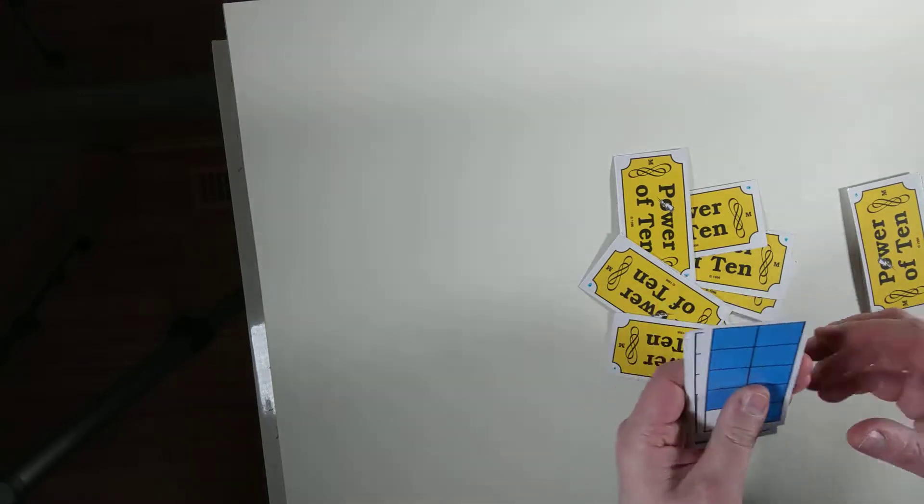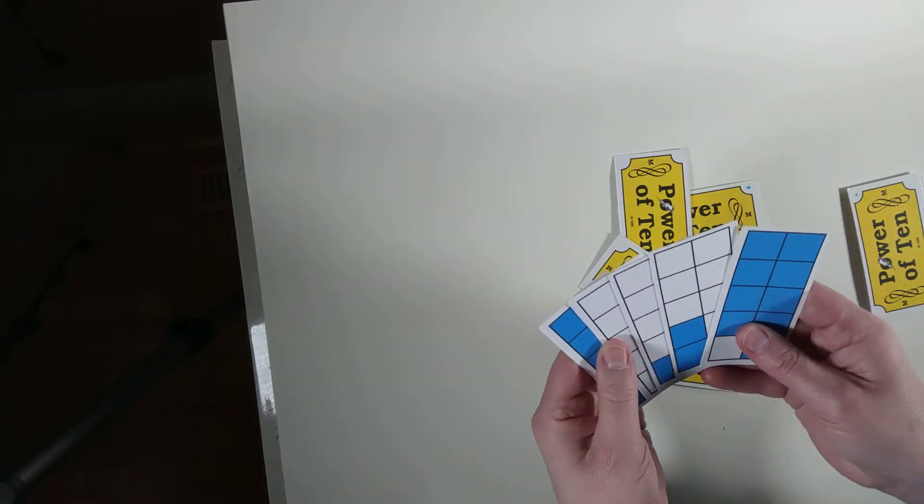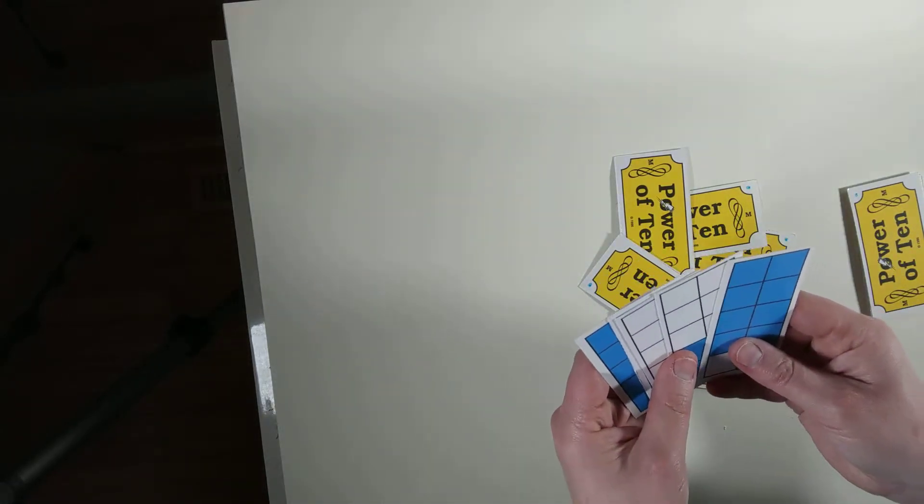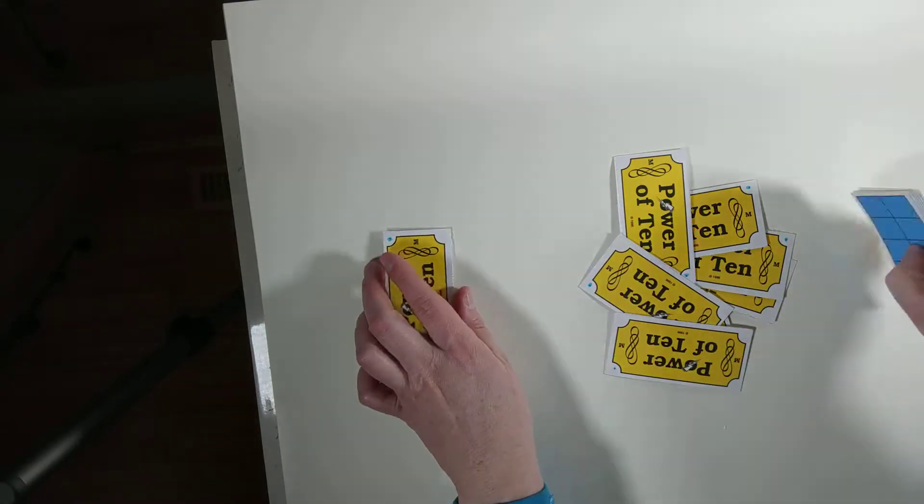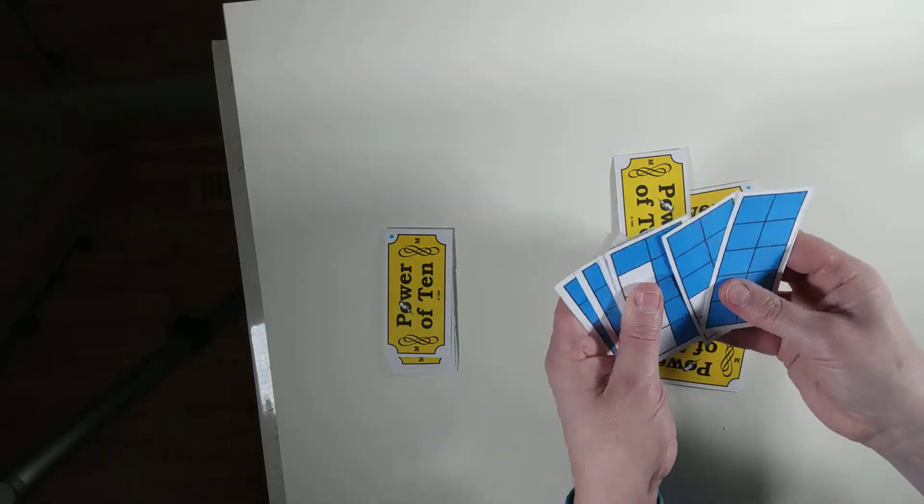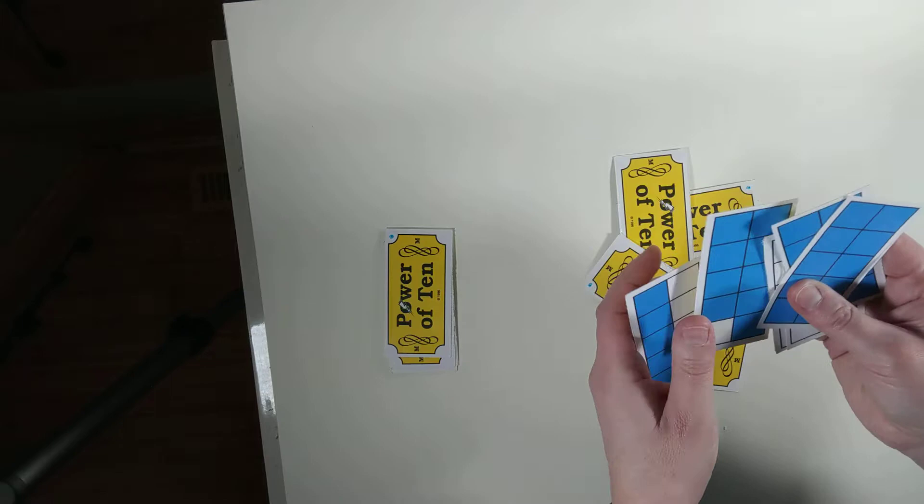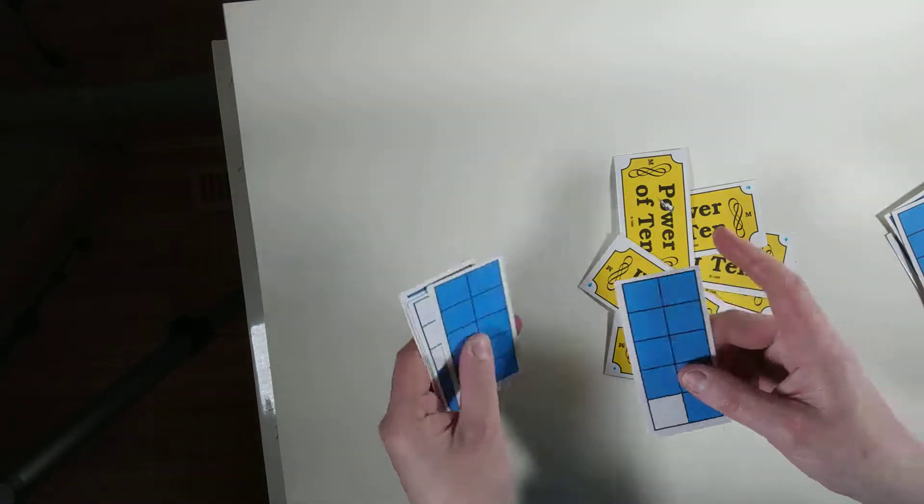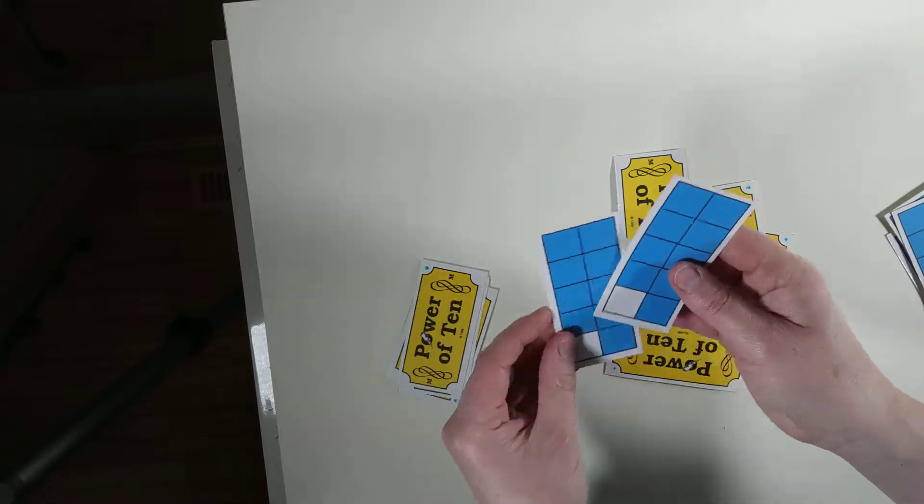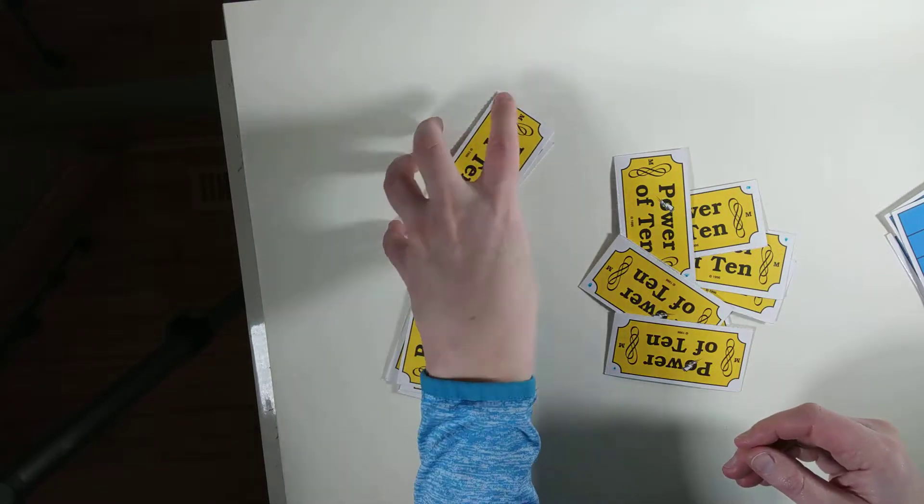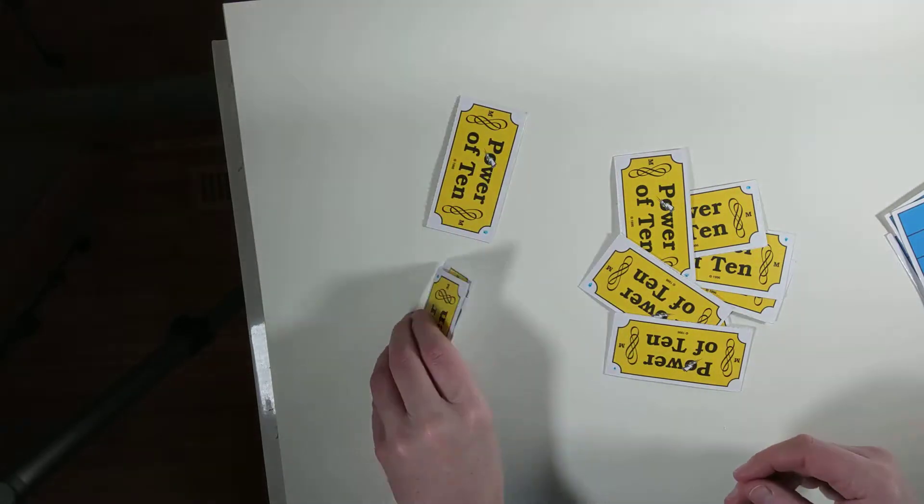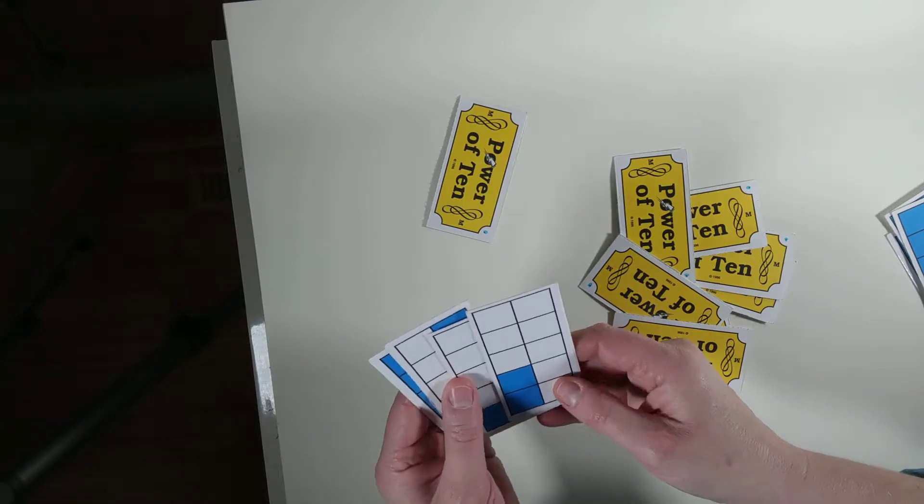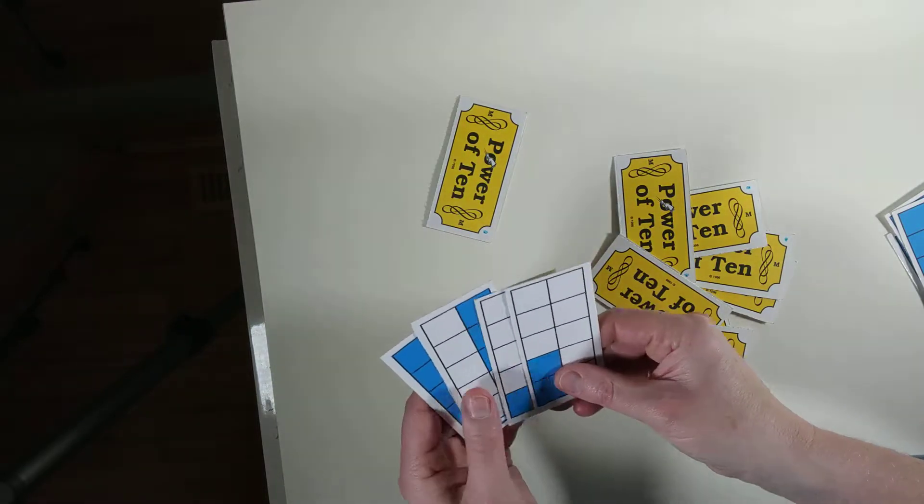So that would be my partner's turn. I might say, do you have a nine? And so then they would look on their thing, and I happen to know for sure I have a nine. So I'd say yes, I would hand it to the partner. They would then create their set, put that down, and it would be their turn again because they got a set.